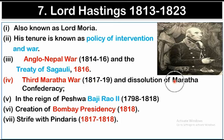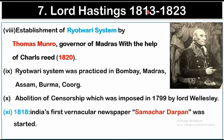After the Third Maratha War, there was the dissolution of the Maratha Confederacy. The Peswa during this war was Bajirao II, whose tenure was from 1798 to 1818. After the war, the Bombay Presidency was created in 1818. Under his tenure, the strife with Pindaris from 1817 to 1818 was significant; the Pindaris were irregular soldiers of the Marathas whose main purpose was to loot after a war. Lord Hastings also implemented the Ryotwari system, introduced by Thomas Munro, the Governor of Madras, in 1820 with the help of Charles Reed. The Ryotwari system was practiced in Bombay, Madras, Assam, Burma, and Coorg.